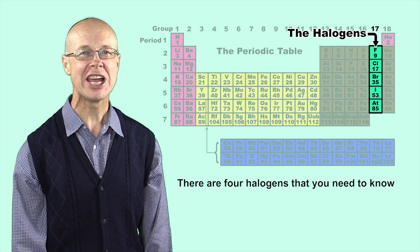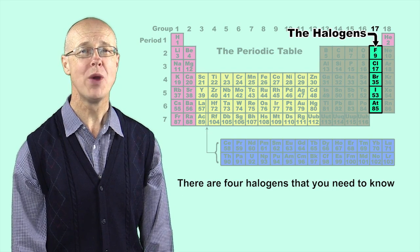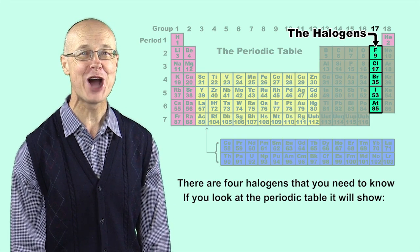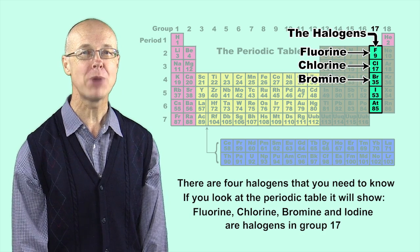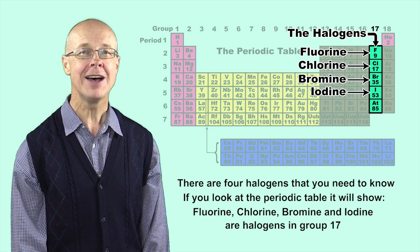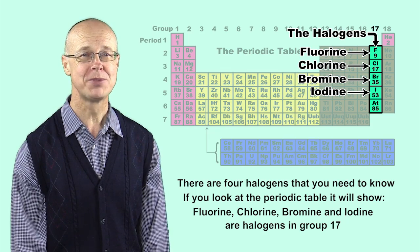There are four halogens that you need to know. If you look at the periodic table it will show: Fluorine, Chlorine, Bromine and Iodine are halogens in group 17.